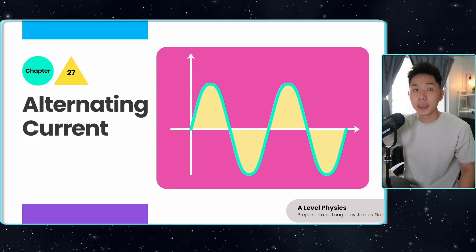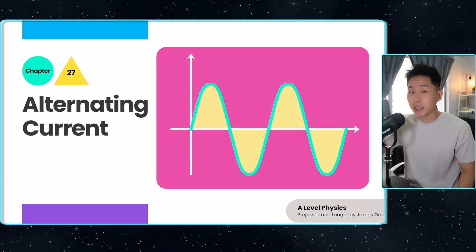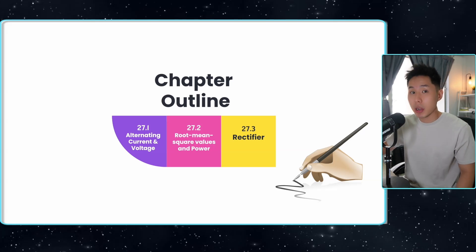Hello everyone, welcome back to this channel. Today we're going to look into chapter 27 of A-level physics, alternating current. And this is the chapter outline.